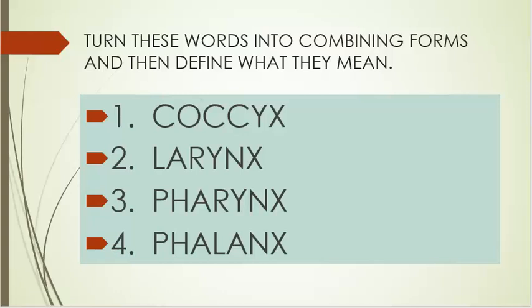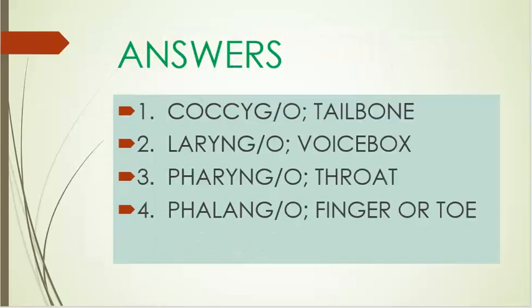Turn these words into combining forms and then define what they mean. Number one: coccyx. Number two: larynx. Number three: pharynx. Number four: phalanges. Answers. Number two: laryngeal — voice box. Number three: pharyngeal — throat. Number four: phalangeal — finger or toe.